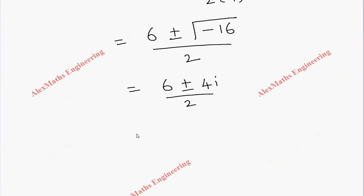We can take 2 common, so 3 ± 2i divided by 2. We can cancel this, so we got the values of m.